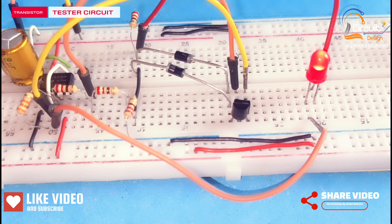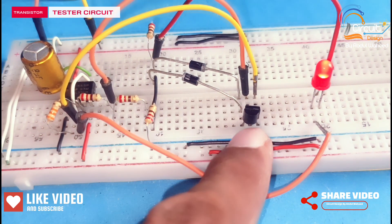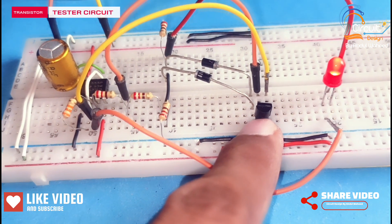You can check the LED is continuously blinking. It means that this transistor is NPN type.